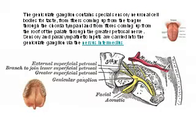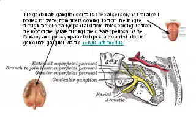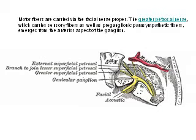The geniculate ganglion contains special sensory neuronal cells for taste from fibers coming up from the tongue through the chorda tympani, and from fibers coming up from the roof of the palate through the greater petrosal nerve. Sensory and parasympathetic inputs are carried into the geniculate ganglion via the nervous intermedius. Motor fibers are carried via the facial nerve proper. The greater petrosal nerve, which carries sensory fibers as well as pre-ganglionic parasympathetic fibers, emerges from the anterior aspect of the ganglion.